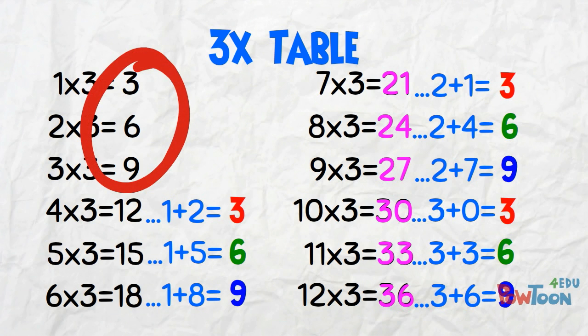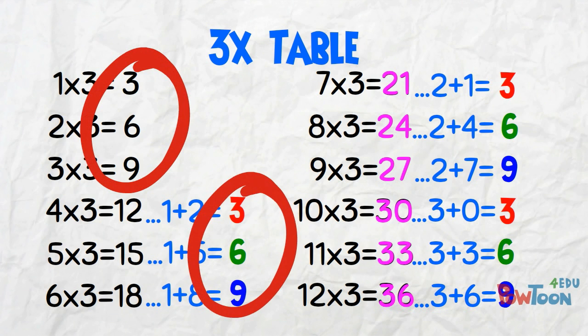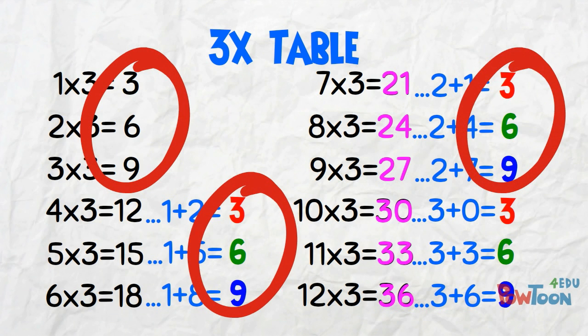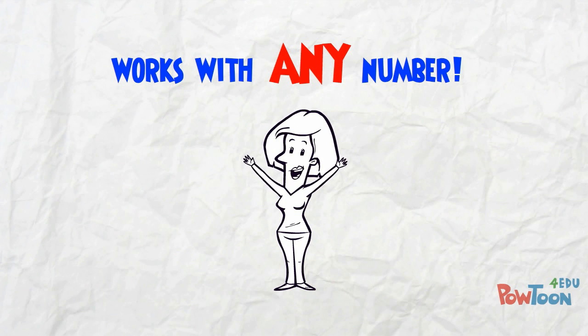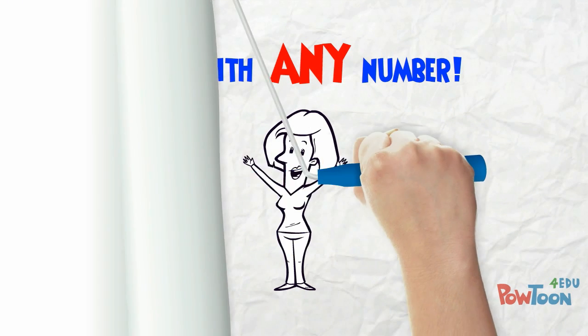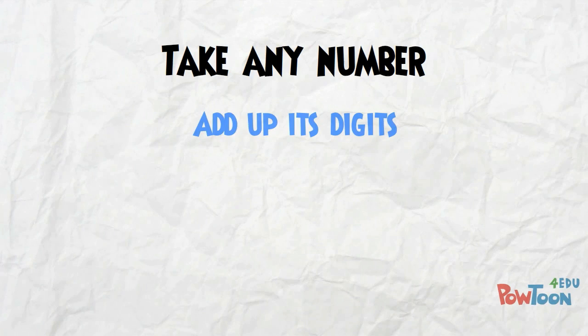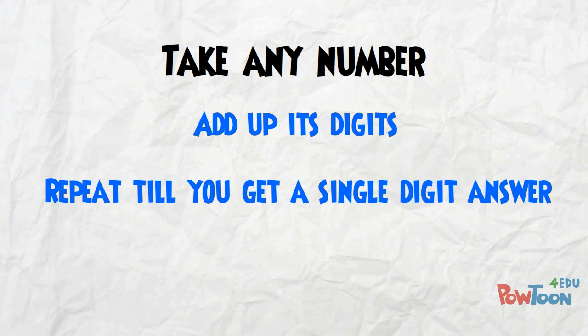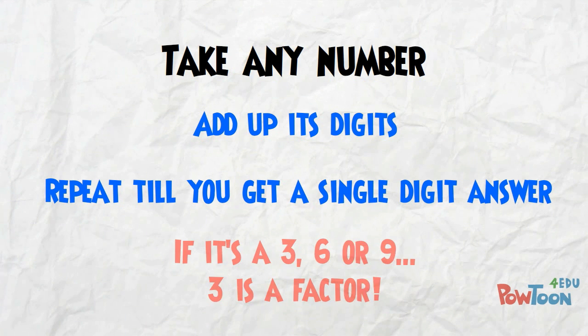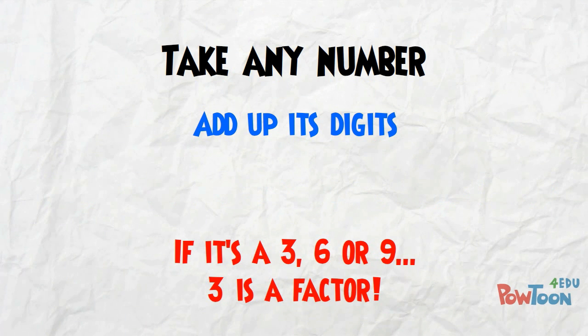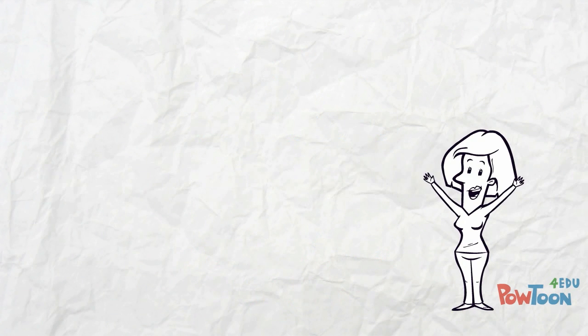3, 6, 9... 3, 6, 9... 3, 6, 9. And the really cool thing is, this method works with any number! You just add up each of its digits and repeat until you get down to a single digit answer. If it's a 3, 6, or 9, you know that 3 is a factor — no division required!